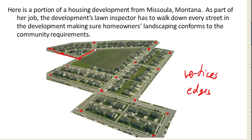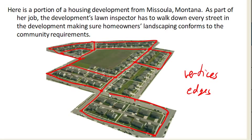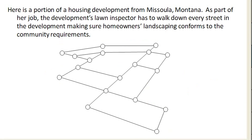Along each of these streets we're going to draw an edge. When we put this all together, we get a graph. This graph represents the city. Taking away the background picture, we get something that looks like this — a set of vertices connected by edges — and this defines a graph.